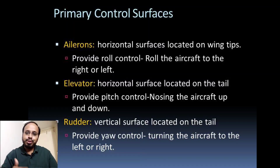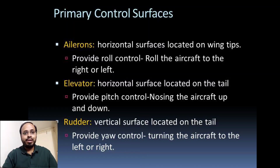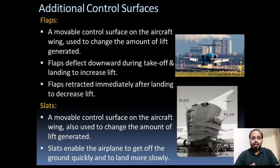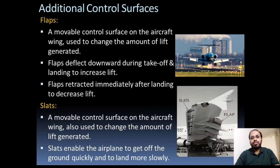The ailerons are mounted on the main wing with a flap at the trailing edge. The elevator is mounted on the tail section, and the rudder is also found on the tail section. These three components are the primary control surfaces, very important for providing stability and control during flight. Flaps and slats are also very important components used to increase the amount of lift.